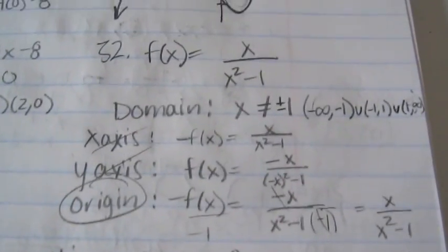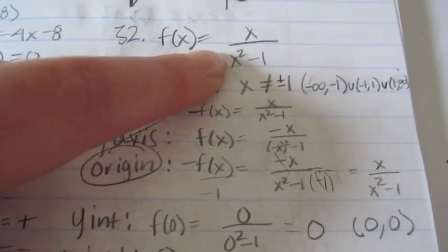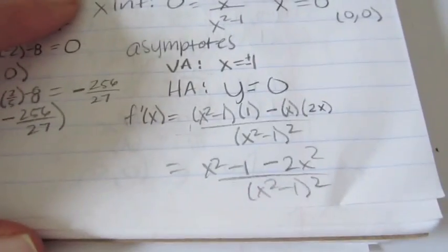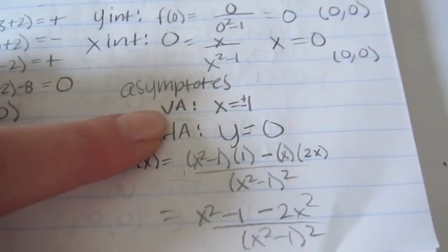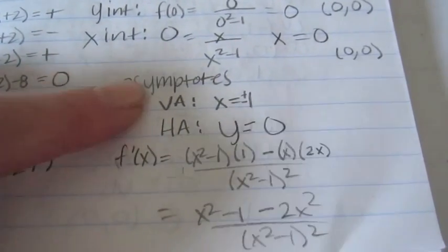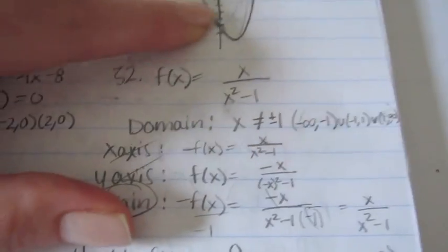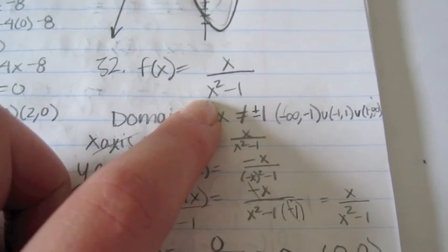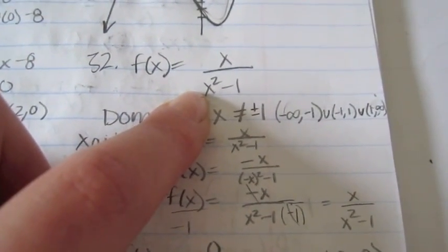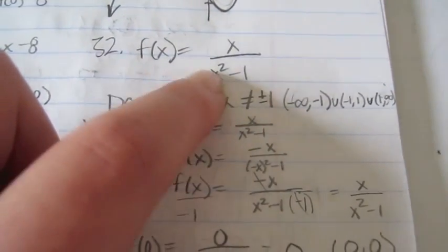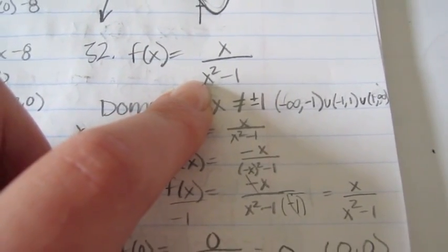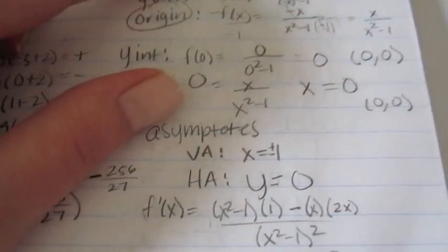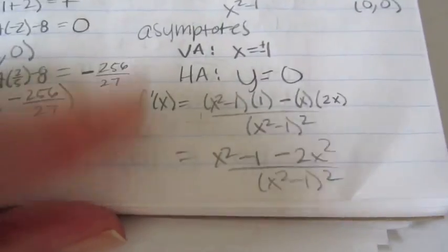For asymptotes: the vertical asymptotes come from setting the denominator to 0, which we already found in the domain — x = ±1. For the horizontal asymptote, the degree of the numerator is less than the degree of the denominator, so y = 0. If the numerator's degree were greater, you'd get a slant asymptote; if equal, you'd take the leading coefficients.